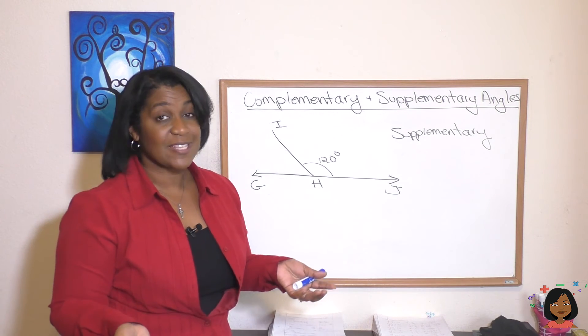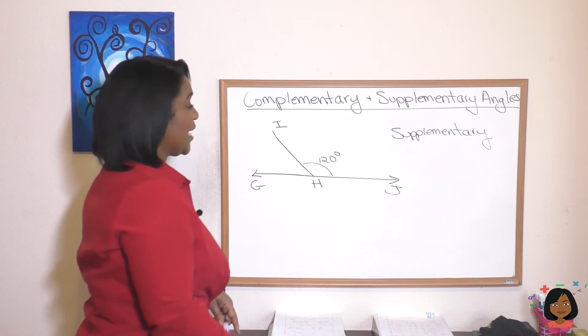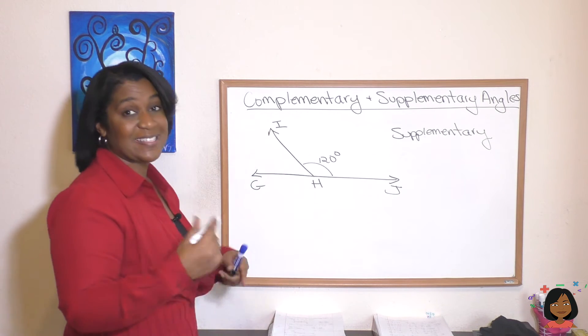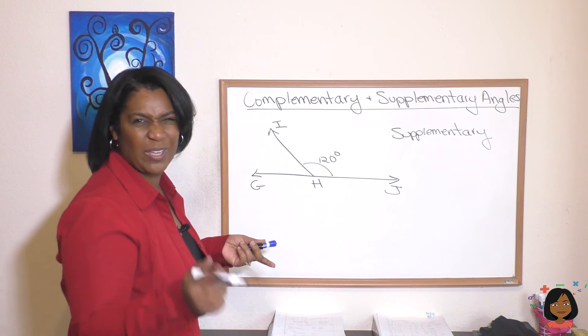Okay, so complementary angles add up to 90 degrees. The other half of this lesson is called supplementary angles. So what are those? Take a look. We've got angle IHJ that's 120 degrees and we have a straight line, a straight angle. We know those are 180 degrees.